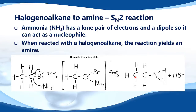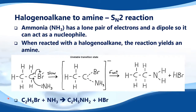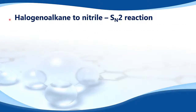This case has 1 and 2 carbons, so it's ethanamine, and HBr, which is hydrogen bromide. The equation is C2H5Br plus NH3 gives you C2H5NH2 plus HBr.